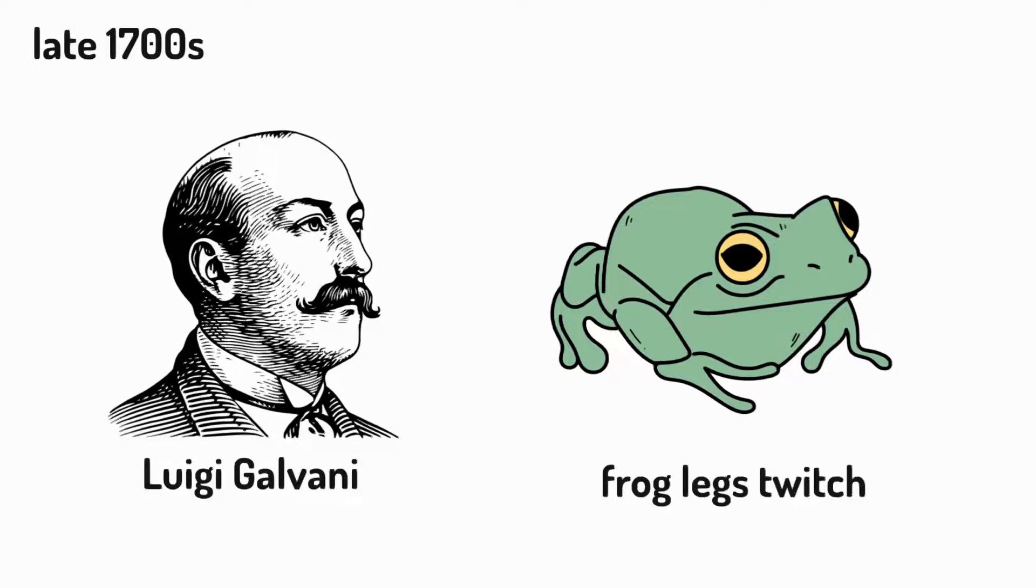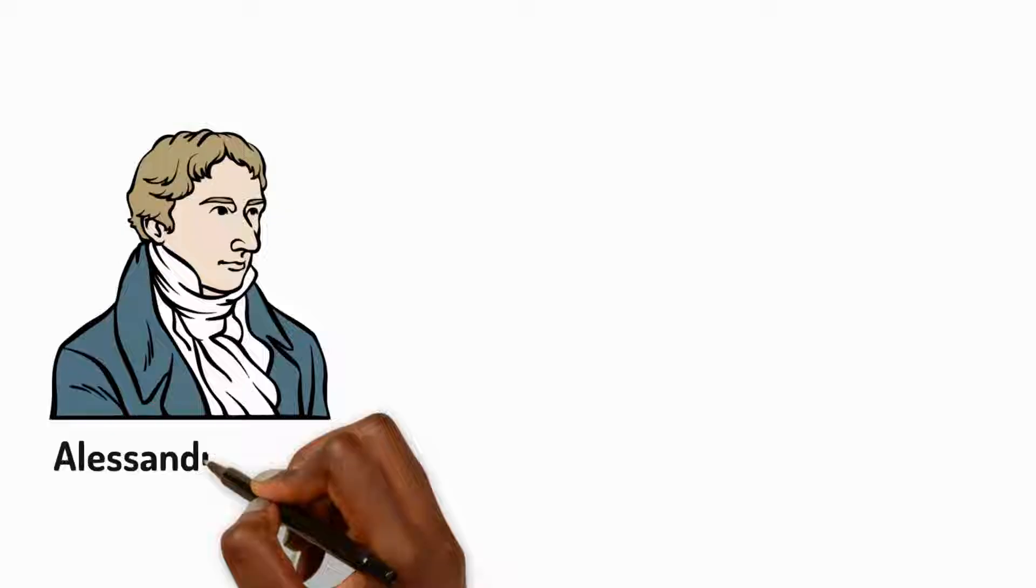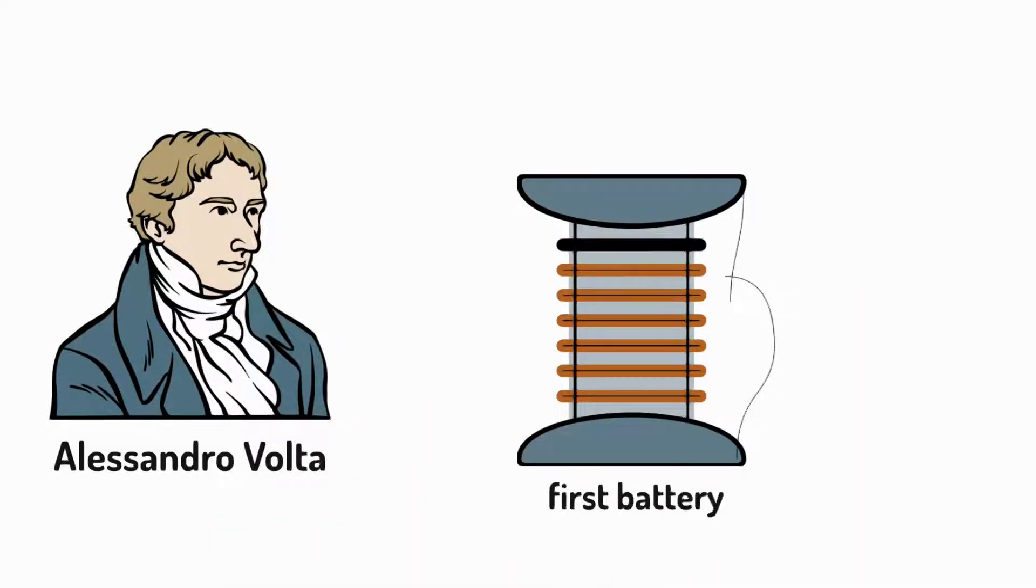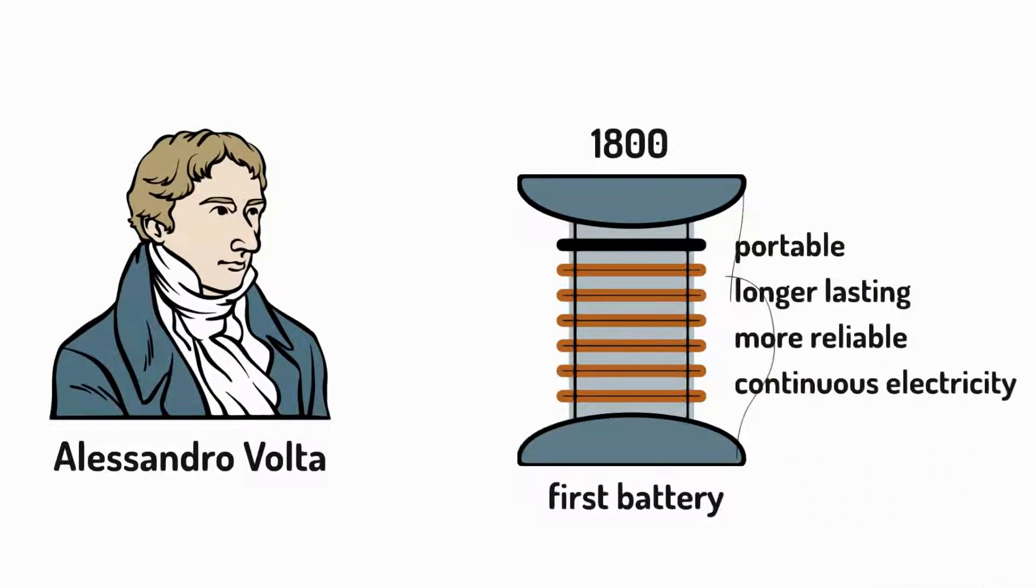Another Italian scientist, Alessandro Volta, invented the first battery in 1800. Volta's battery offered portable, longer lasting and more reliable, continuous electricity compared to previous methods. And this paved the way for future technologies.